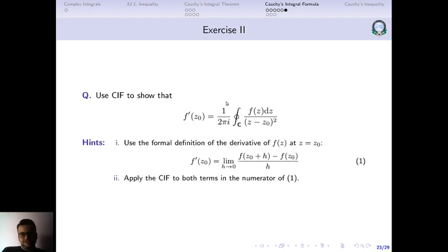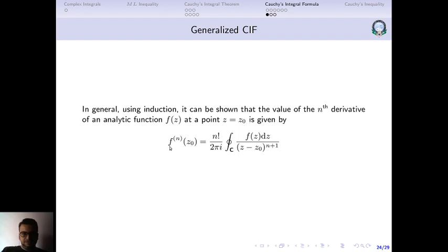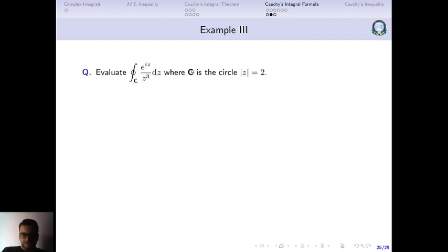Now the generalized Cauchy integral formula. This result — which I'm leaving for you to derive as an exercise — can be generalized. For the first derivative the power is 2; for the second derivative the power becomes 3. Using mathematical induction, you can show that the nth derivative of f at z₀ equals n! divided by 2πi times the closed loop integral of f(z) divided by (z minus z₀)^(n+1). That is the generalized Cauchy integral formula. The proof is beyond the scope of your course, so I will not be proving it here.